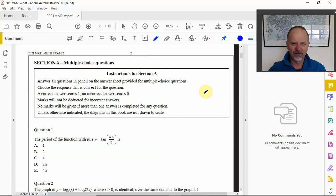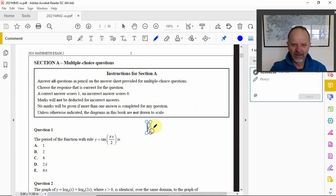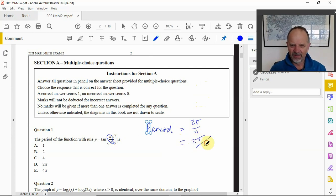Question one we're looking at the period of the function. We've got a tan function, so for tan our period would be given by 2π/n, and in this case n is π/2. So it's 2π divided by π/2. If we are dividing by a fraction we would turn it upside down and multiply.